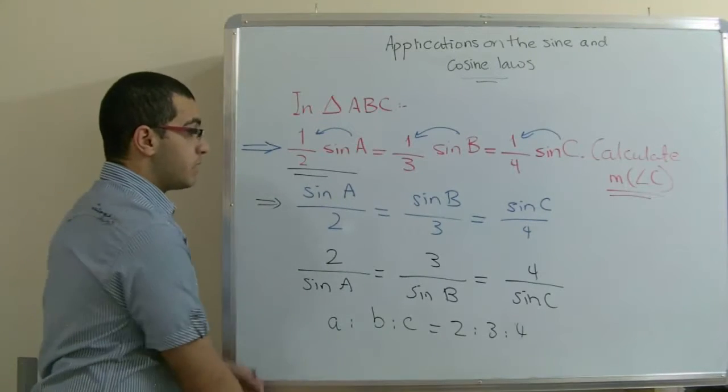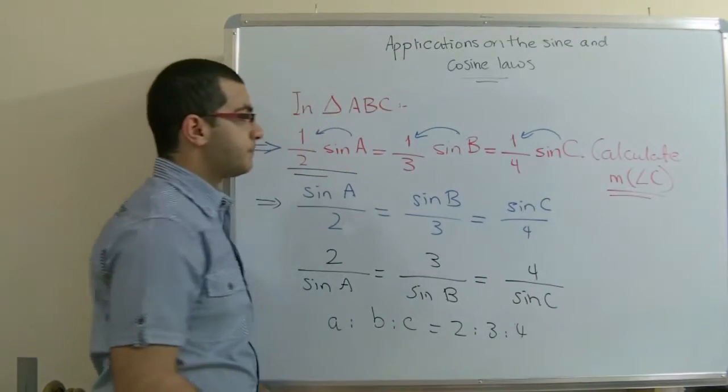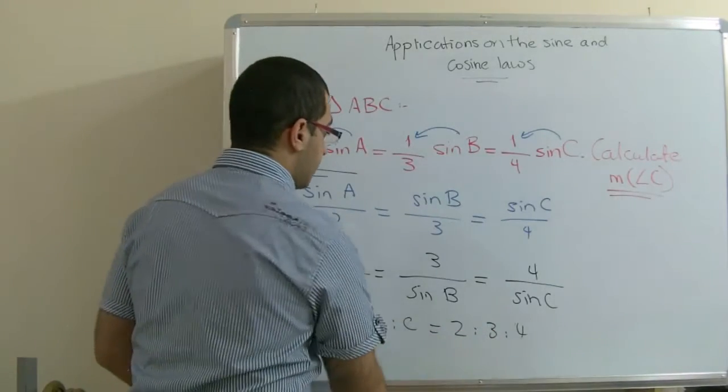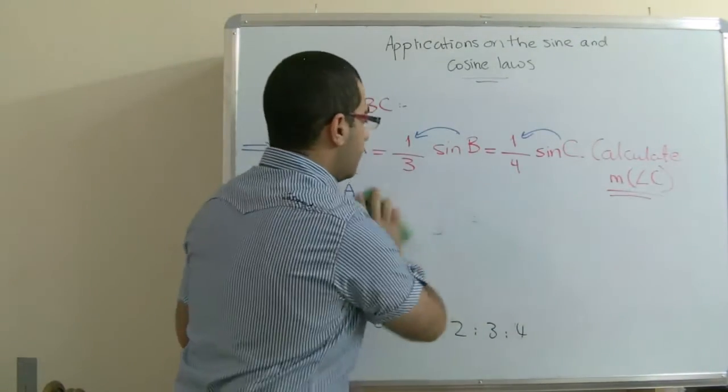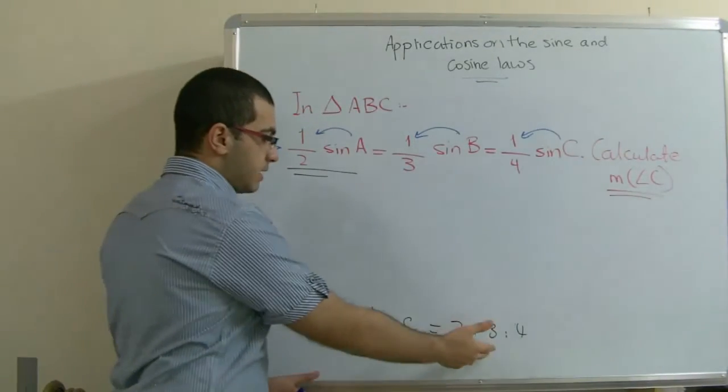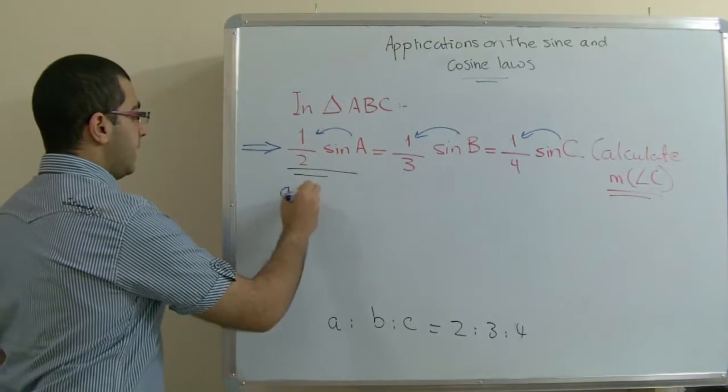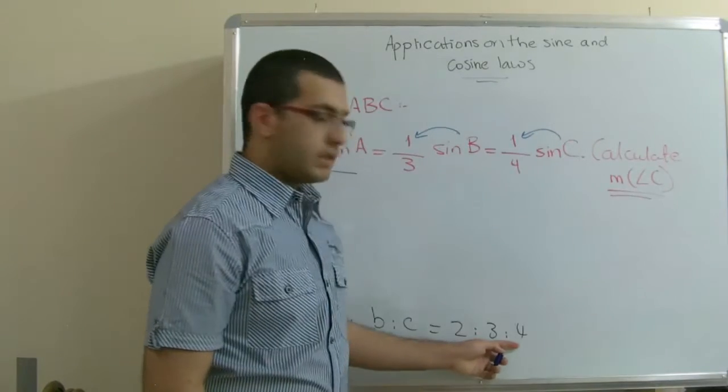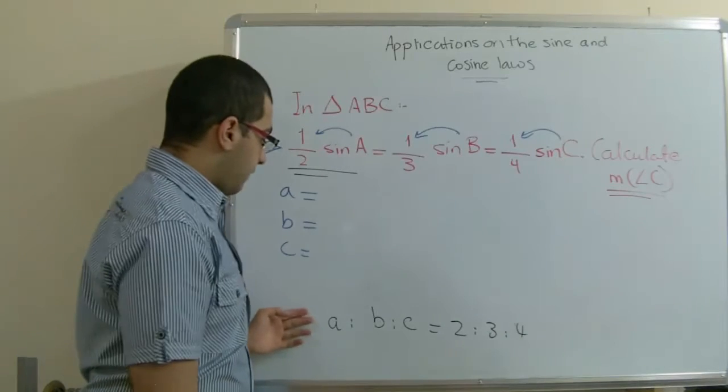Then we will use the cosine law in order to calculate measure angle C. But we cannot substitute directly with the values here because these values here are just ratios, they are not actual measures. So to write A equals, B equals and C equals, we multiply each of these by a constant as if we were obtaining their actual measures.